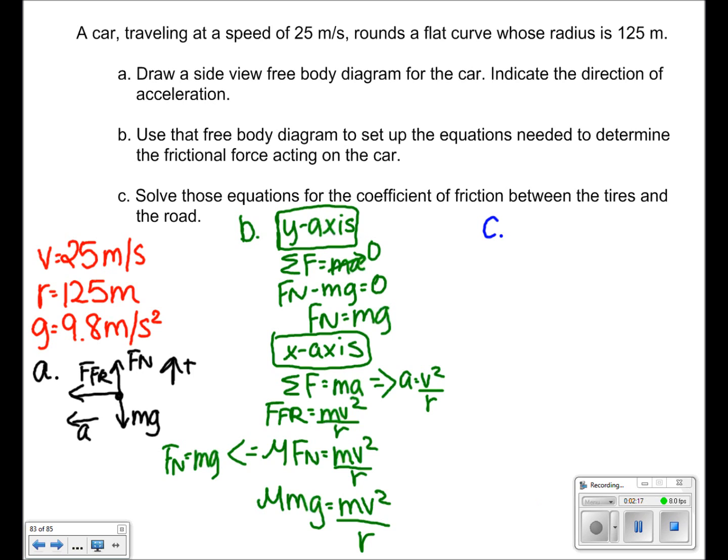In part c, we will use our equation to solve for the coefficient of friction. We have mu mg equals mv squared over r. Cross out the m's because they cancel each other out. So, now we're left with mu equals v squared over r divided by g. From here, plug in your values of 25 for v, 9.8 for g, and 125 for r to find that the coefficient of friction equals 0.51.